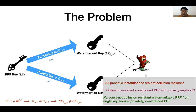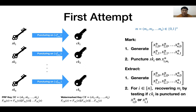So in this work, we attempt to overcome this barrier in another direction: we will try to construct collusion-resistant watermarkable pseudorandom functions from single-key secure constrained PRFs. Our key idea is to encode bits of the message into different secret keys, instead of encoding them into different puncture points.